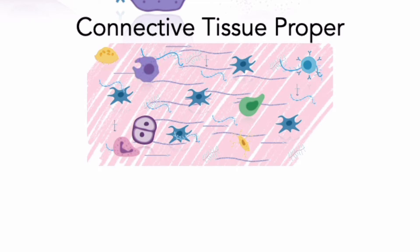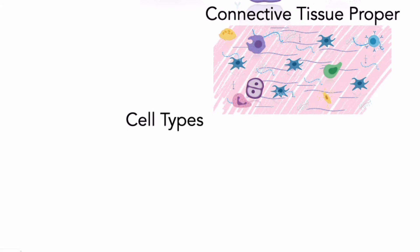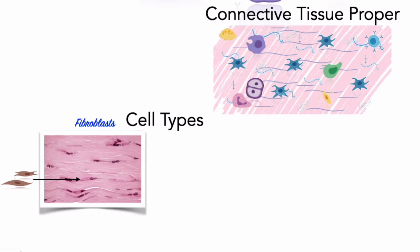Connective tissue proper includes four major cell types. First, fibroblasts. Fibroblast cells are the only cells that are always present in connective tissue proper. They are also the most abundant permanent, or fixed, cells in connective tissue proper. Fibroblasts produce connective tissue fibers and ground substance. Fibrocytes are next in abundance and differentiate from fibroblasts; thus, fibrocytes are mature fibroblast cells. The role of a fibrocyte is to maintain the connective tissue fibers of connective tissue proper.